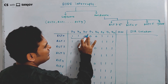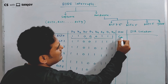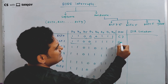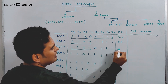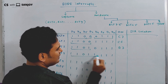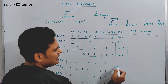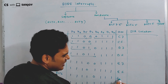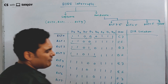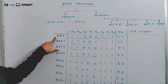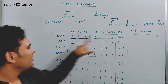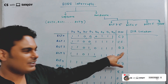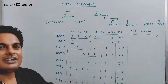The hex code for RST0 is C7. Then RST1 is CF. RST2 is D7. RST3 is DF. Similarly, RST4 is E7. RST5 is EF. RST6 is F7. And RST7 is FF. So the hex codes of RST0 through RST7 are: C7, CF, D7, DF, E7, EF, F7, FF.